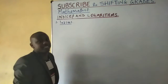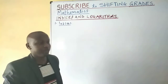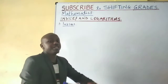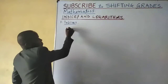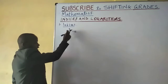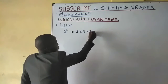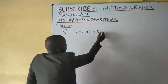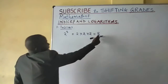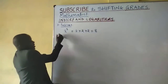Indices is the plural of index, and an index in mathematics is the power into which a certain number has been raised. Therefore, if for example we say 2 power 3, it means 3 is the index into which 2 has been raised, and it means 2 times 2 times 2, which is 8.